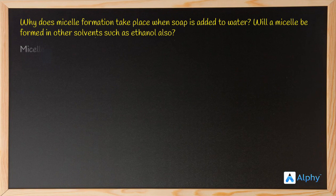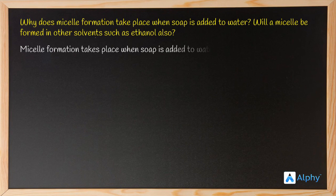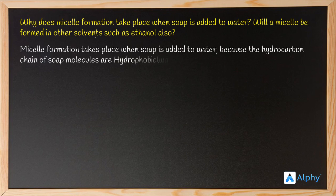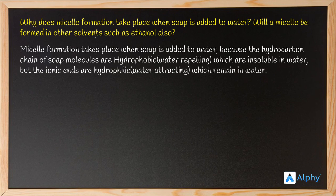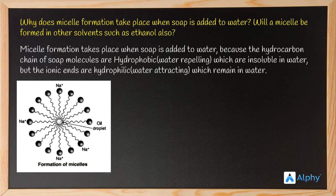Micelle formation takes place when soap is added to water because the hydrocarbon chain of soap molecules is hydrophobic — that is, water repelling — and insoluble in water, but the ionic ends are hydrophilic, or water attracting, and remain in water. This is how the formation of a micelle occurs.